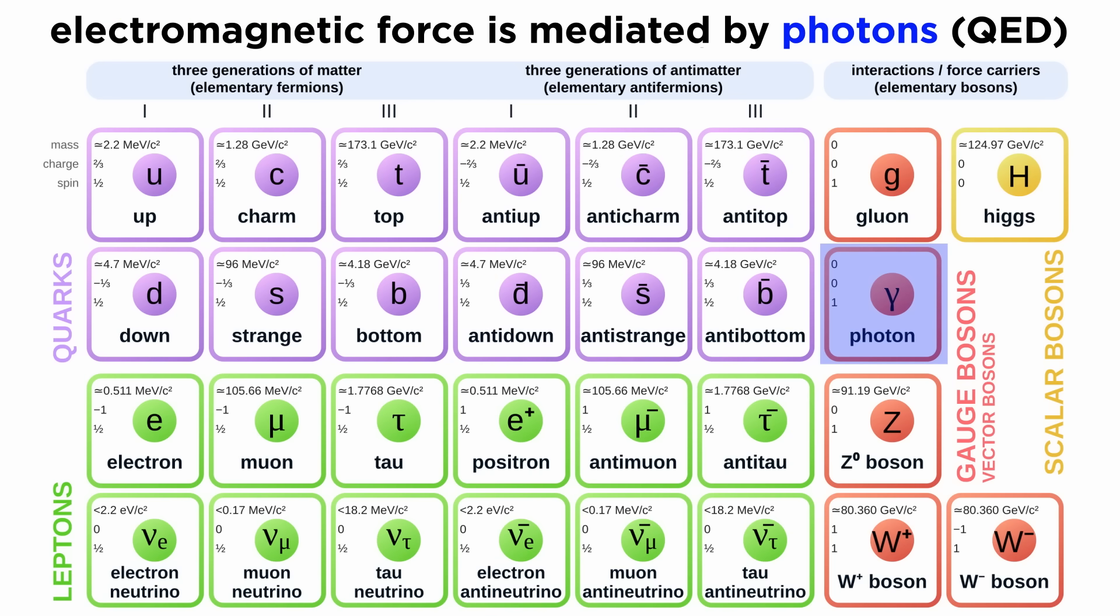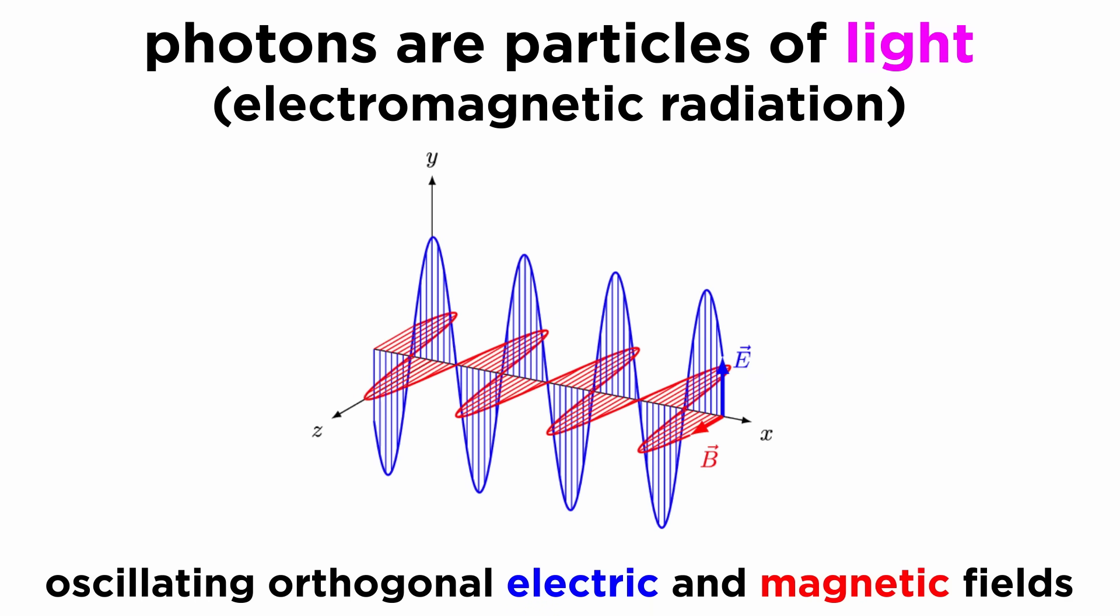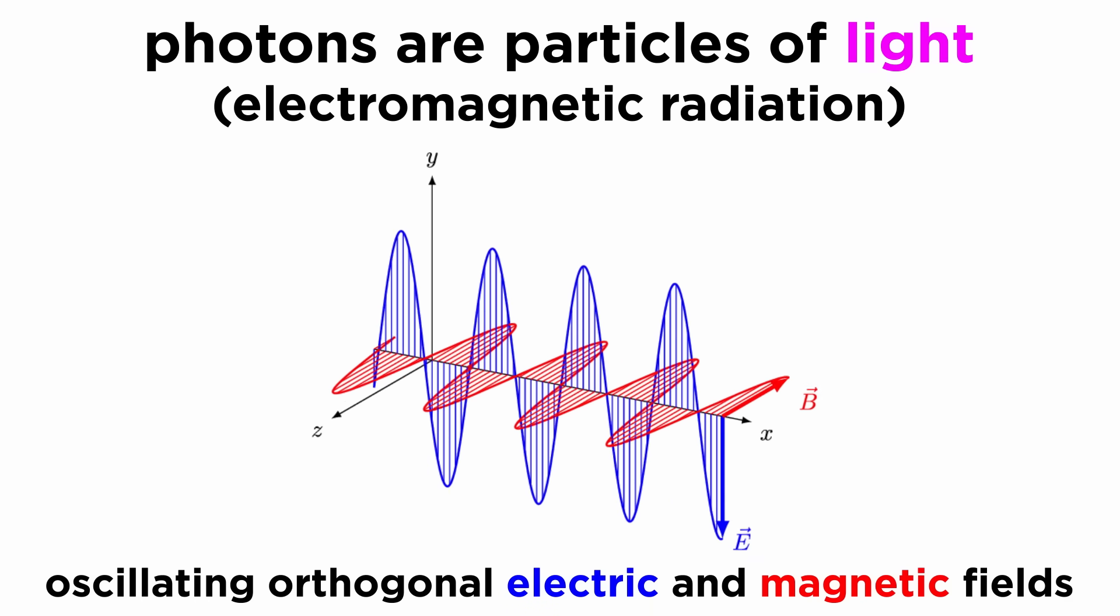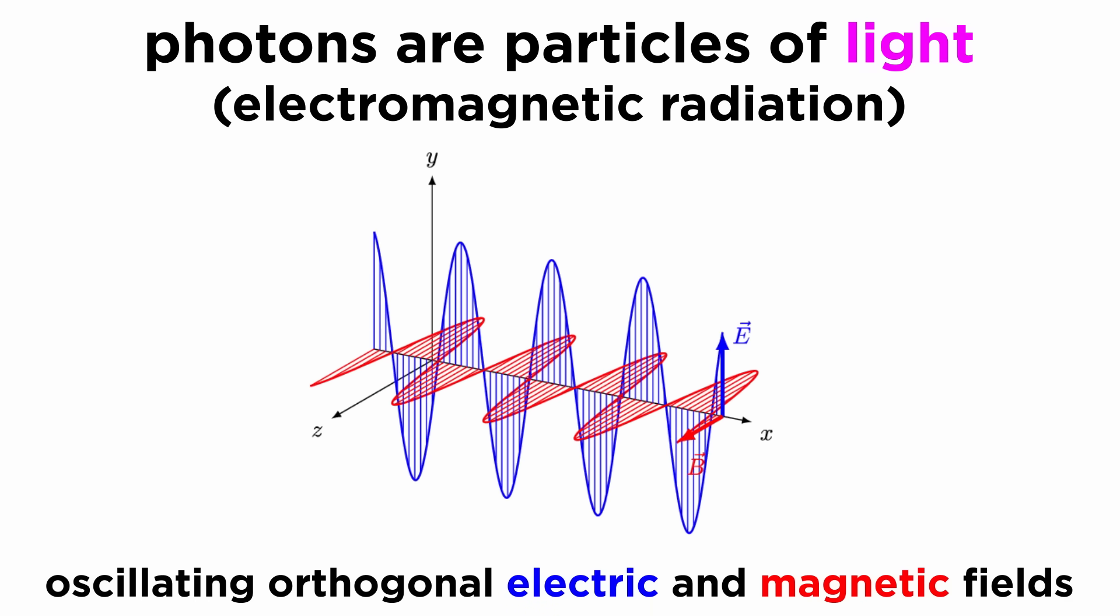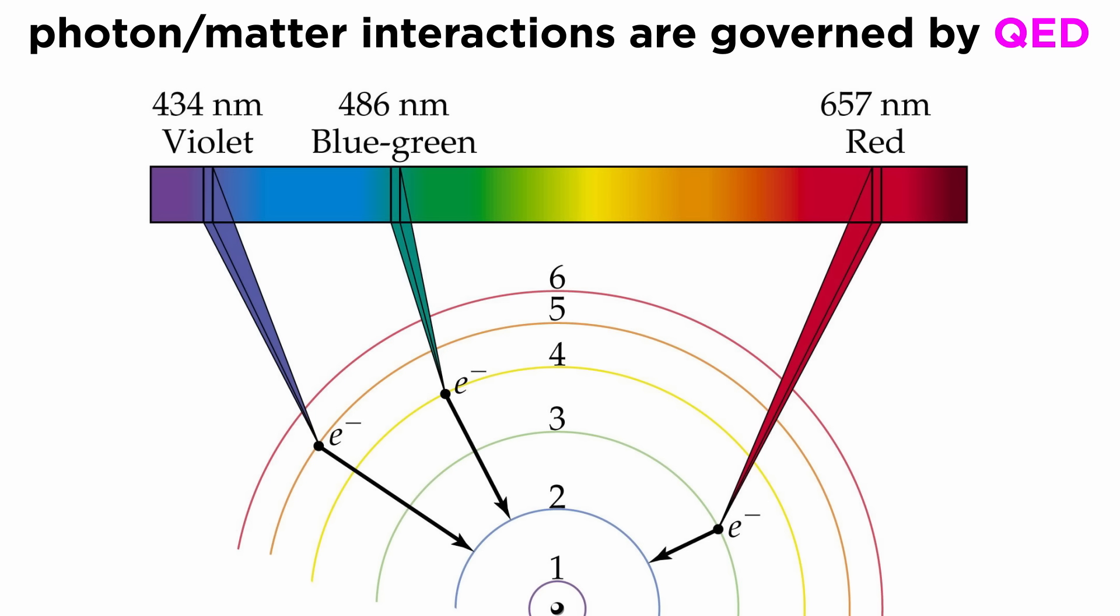Finally, the electromagnetic force, which is modeled by quantum electrodynamics, or QED, is mediated by the photon. The photon is known widely as the light particle, and light is composed of oscillating electric and magnetic fields that are orthogonal to one another and propagate through space. As a result, any interactions of photons and matter are governed by QED and electromagnetism.